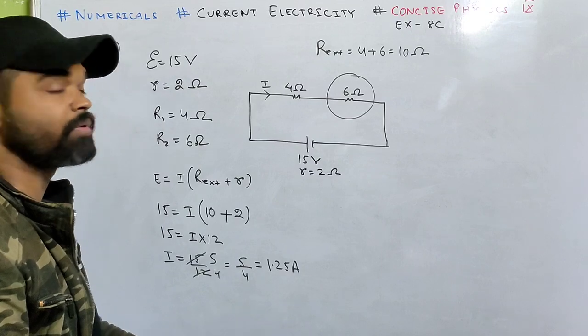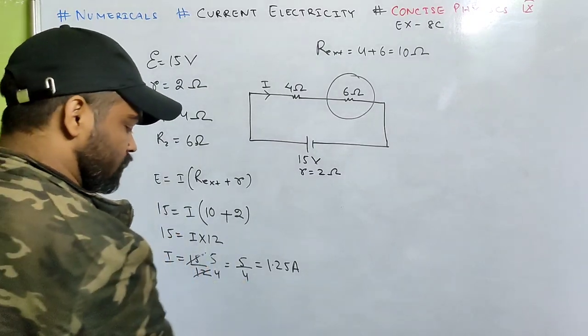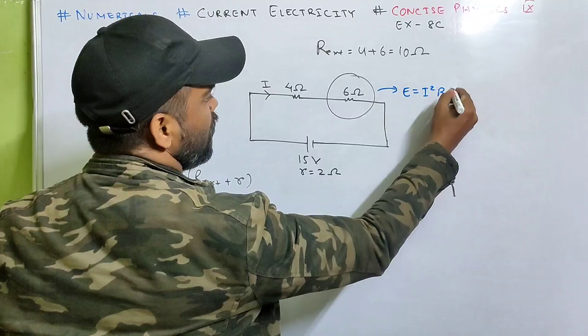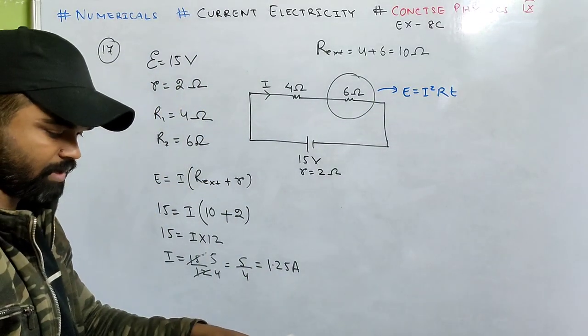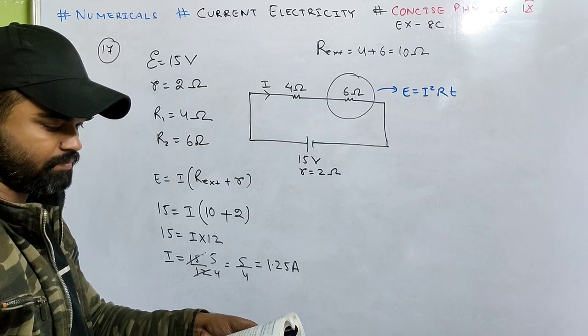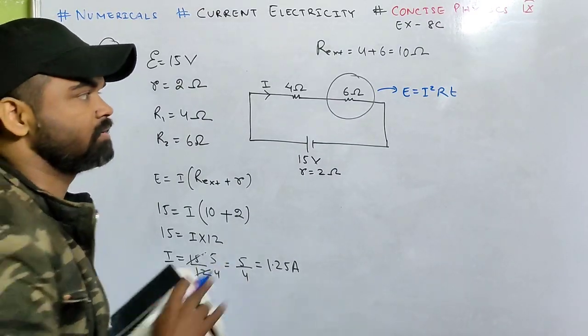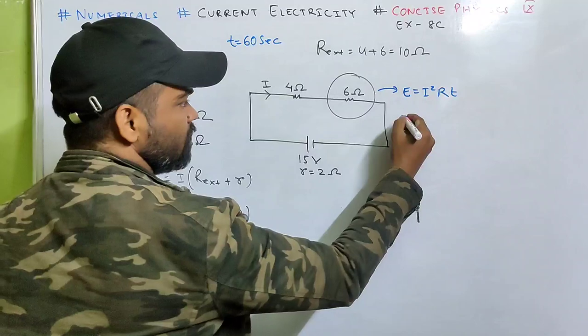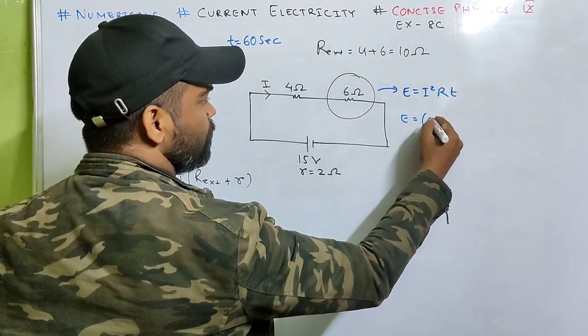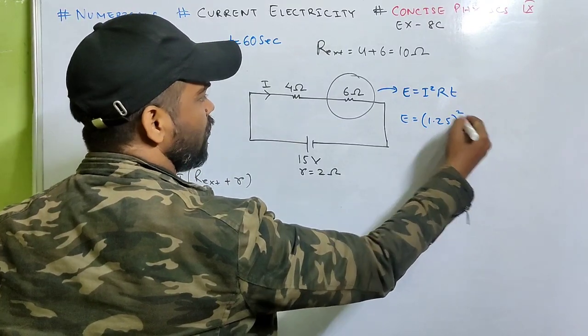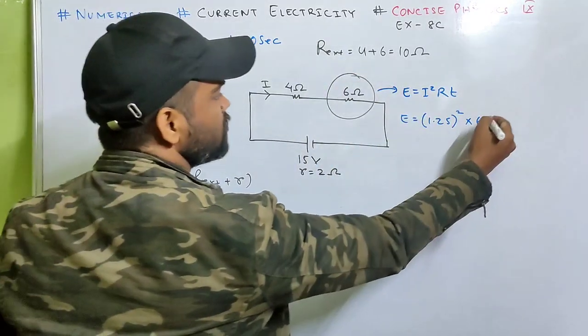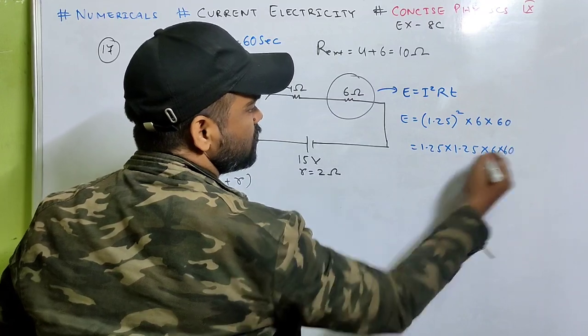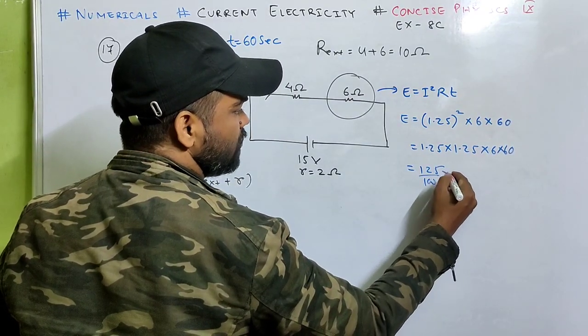This much current flows through both resistors because they're in series. Now, electrical energy spent in the 6 ohm resistor - electrical energy can be written as I squared R T, where T is time. Have they given the time? Yes, per minute, so time is 60 seconds.